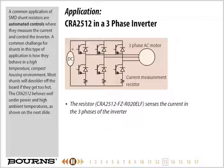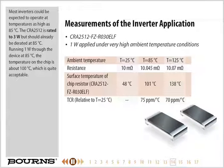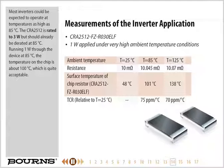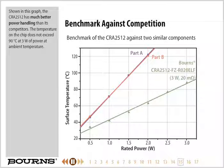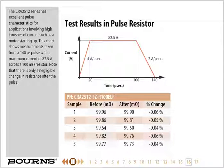Most inverters could be expected to operate at temperatures as high as 85 degrees Celsius. The CRA2512 is rated to 3 watts, but should already be derated at 85 degrees Celsius. Running 1 watt through the device at 85 degrees Celsius, the temperature on the chip is about 100 degrees Celsius, which is quite acceptable. As shown in this graph, the CRA2512 has much better power handling than its competitors — the temperature on the chip does not exceed 90 degrees Celsius at 3 watts at ambient temperature. The CRA2512 series also has excellent pulse characteristics for applications involving high inrushes of current, such as a motor starting up. Measurements taken from a 140 microsecond pulse with a maximum current of 82.5 amps across a 100 milliohm resistor show only a negligible change in resistance after the pulse.